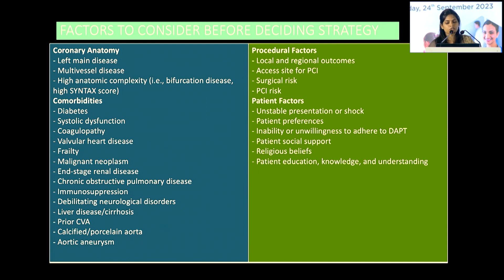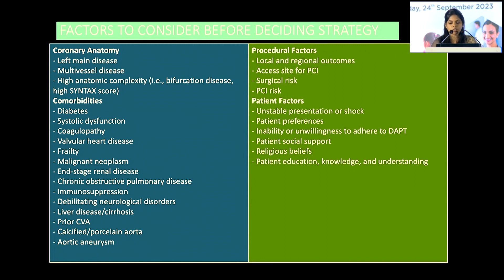The procedural factors include access site, bleeding issues, surgical risk, and PCI risk, where we have various risk stratification scores. Also patient factors — whether the patient is unstable, in shock, or stable — as well as patient preference, social support, economic considerations, religious beliefs, and their knowledge and understanding. All these need to be taken into consideration before making a decision.